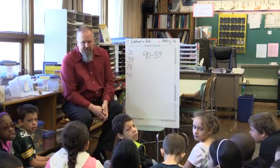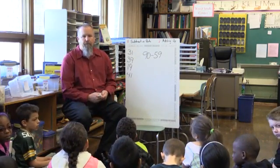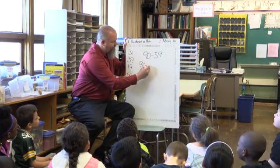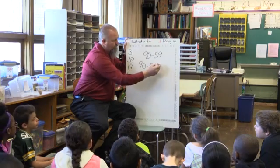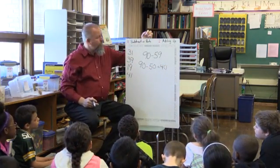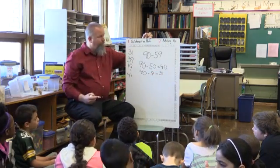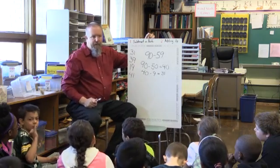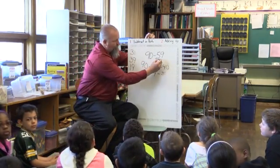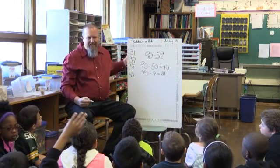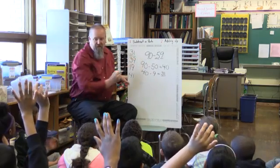Kayla, which answer did you come up with? 31. Can you explain how you got 31? 90 minus 50 equals 40, and then 40 minus 9 equals 31. Which strategy did you use, Kayla? Subtracting parts. Where did you get your 50 from? From the 59 — the 50 and the 9. So we've determined that 31 is our answer.